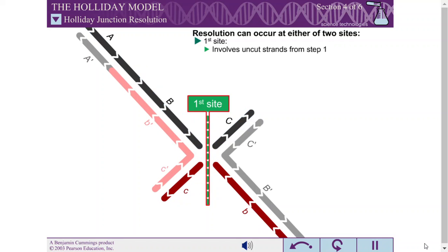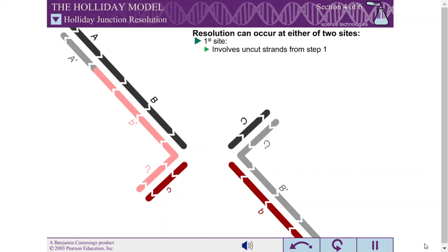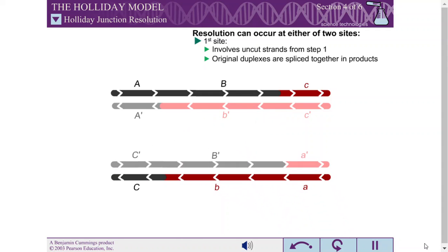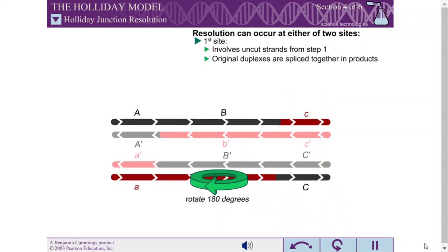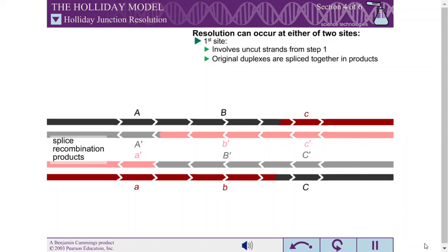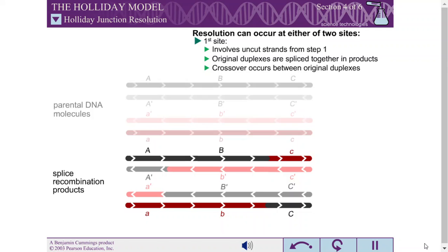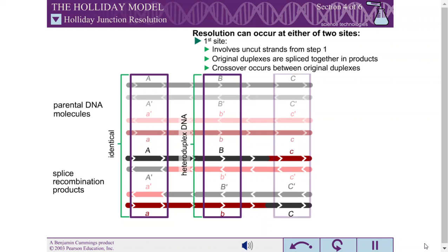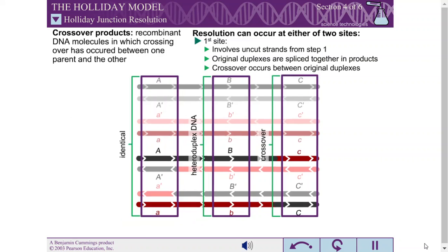The resulting duplexes are called splice recombination products because the two original duplexes are now spliced together, with the DNA sequences flanking the site of recombination swapped. This may not be obvious in the short stretches of DNA shown, but should become clearer in the context of longer DNA duplexes. The resulting duplexes now carry one pair of alleles from one parent, a region of heteroduplex DNA, and the pair of alleles from the other parent. Since the C alleles have switched from one duplex to the other, these products are also called crossover products.